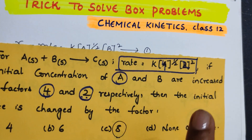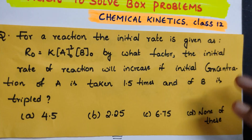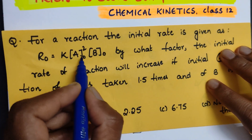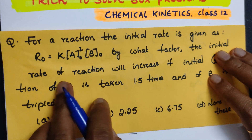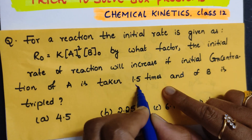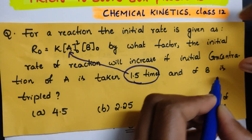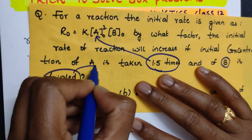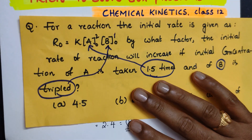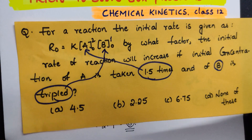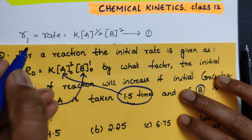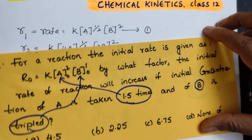I'll give you another example. For a reaction, the initial rate is given as r₀ = k[A₀]²[B]. By what factor will the initial rate increase if the initial concentration of A is taken 1.5 times and B is tripled? Try to solve this yourself without the long method — just substitute directly. I will give the answer in the next video.